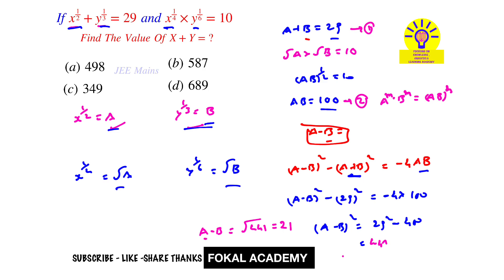Now we have a minus b value, which is 21. Consider this as equation 3. Now add equation 1 and equation 3: a plus b is 29 and a minus b is 21. From this we get 2a equals 50 and a equals 25.